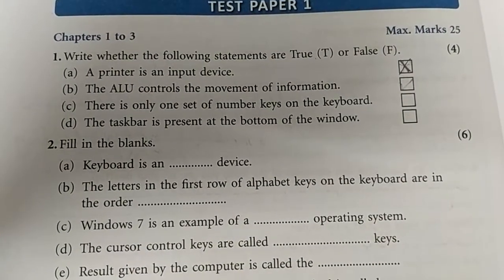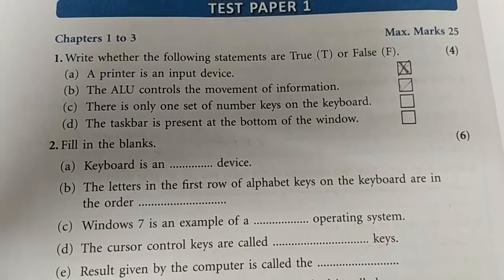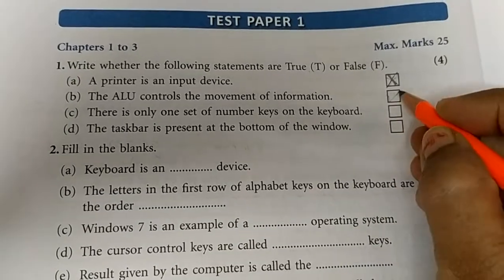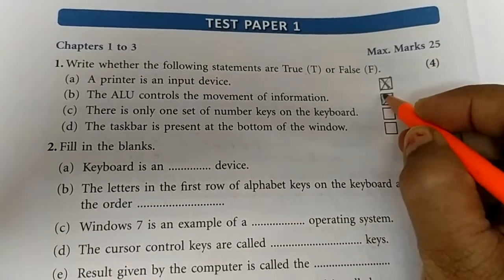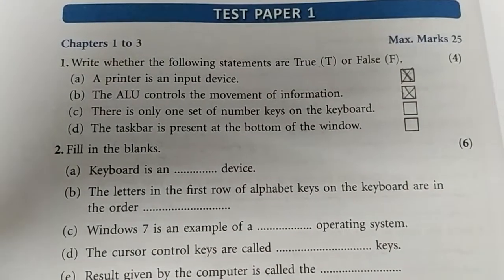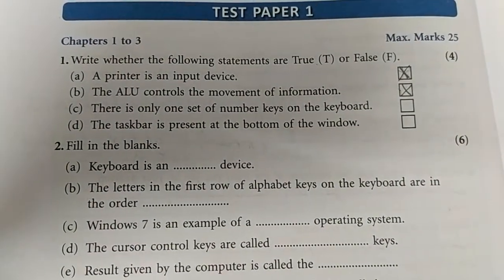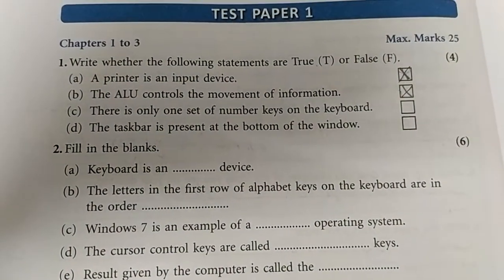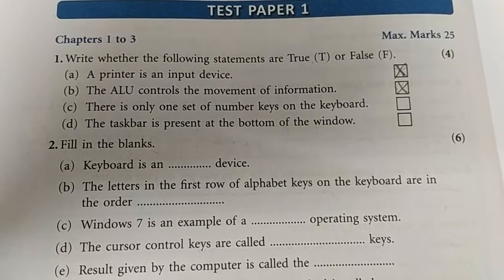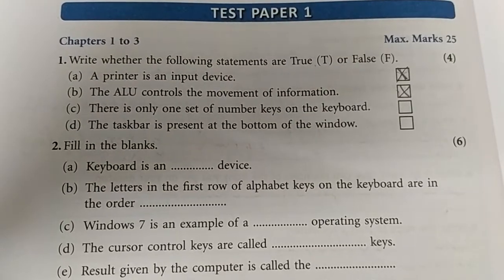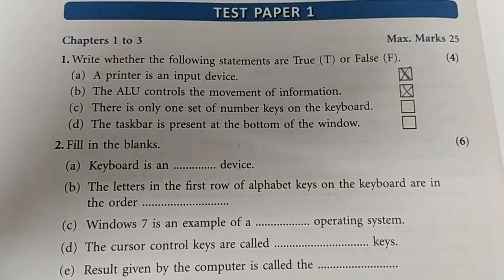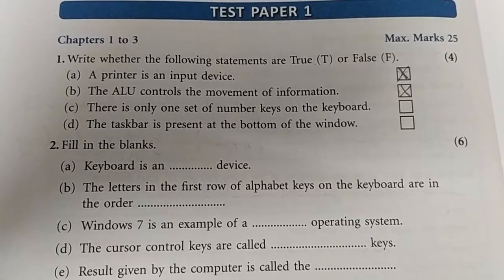The ALU controls the movement of information. Wrong — because the CU, the control unit, controls the information. ALU does not control the information; ALU manages arithmetic calculations.